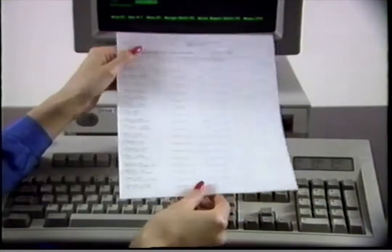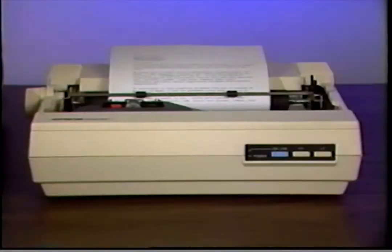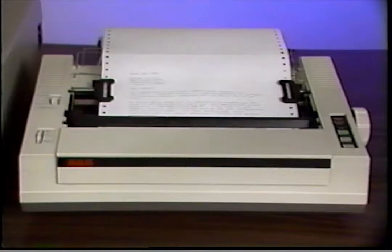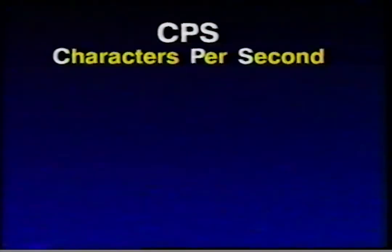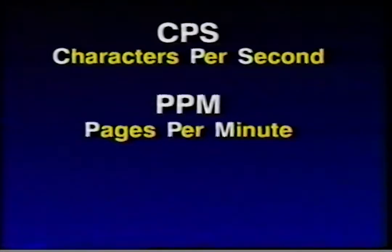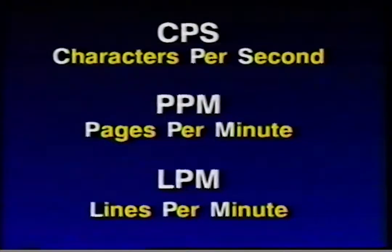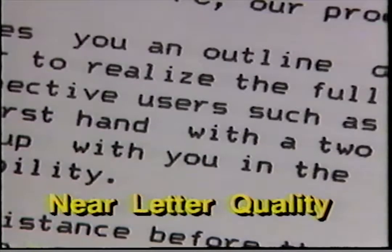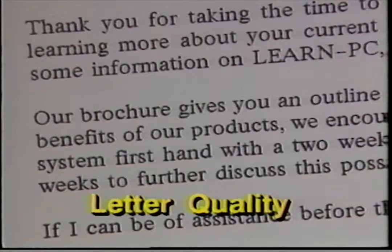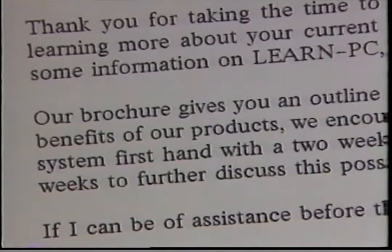Monitors, film recorders, and projectors let you output information visually. But you can also output information onto paper — called a hard copy — using a printer. The two most important features of printers are speed and print quality. Speed is measured in characters per second (CPS), pages per minute (PPM), or lines per minute (LPM). Print quality ranges from draft mode (lowest quality, good for quick copies) to near letter quality (NLQ) and letter quality (LQ), which looks like it was done on a high quality typewriter.